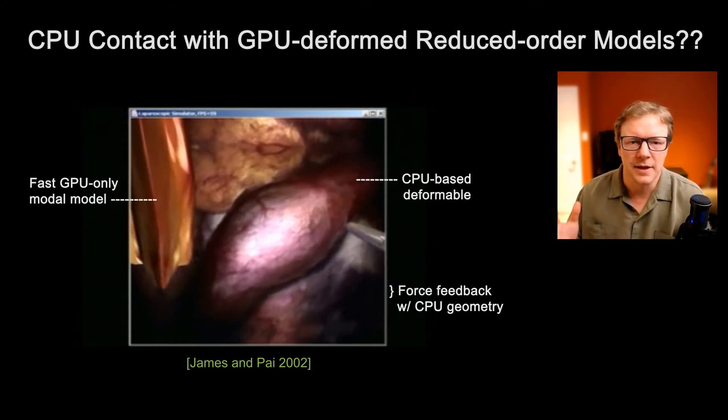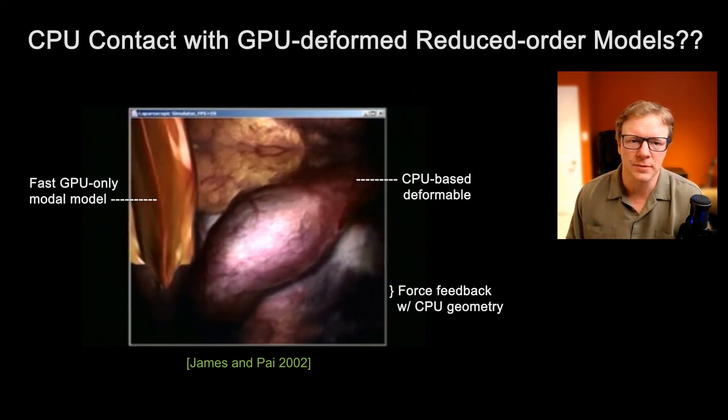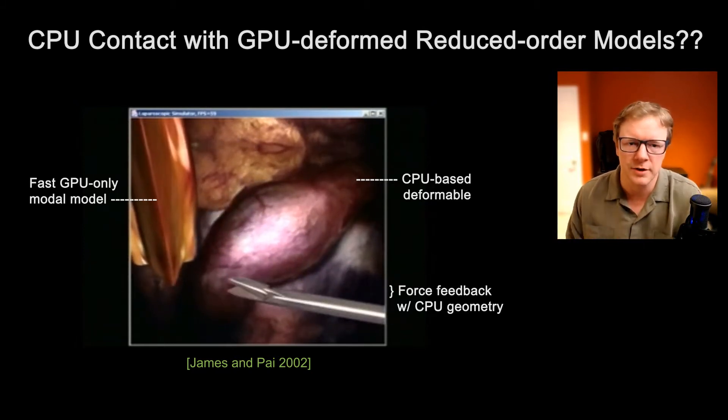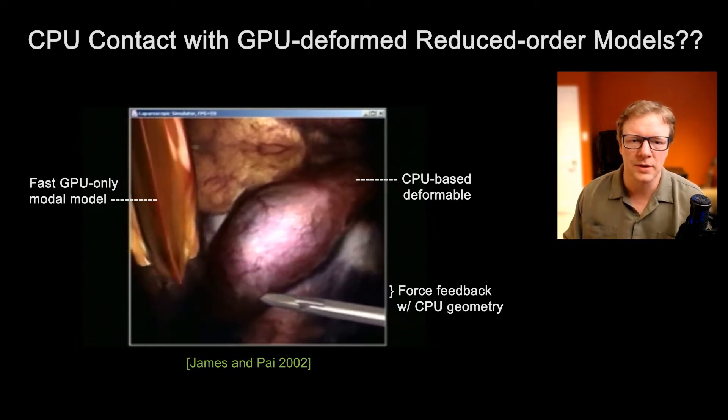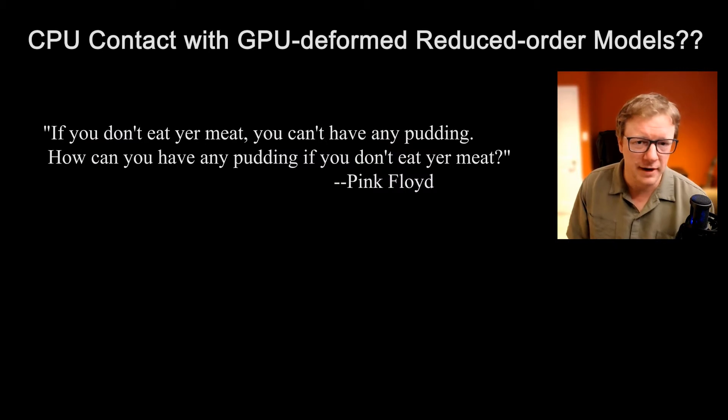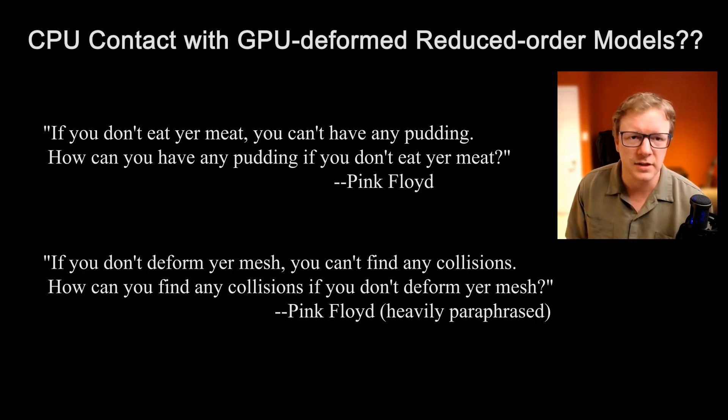The GPU was so fast, but I couldn't actually interact with the objects because it was only deformed and lit just prior to being put on the screen. So how could I interact with it on the CPU to touch it or feel it with a force feedback device? Actually, Pink Floyd recognized this problem much earlier and expressed it slightly differently. But to paraphrase, essentially, if you don't deform your mesh, you can't find any collisions. How can you find any collisions if you don't deform your mesh? So we weren't doing that on the CPU. And so this was the problem.